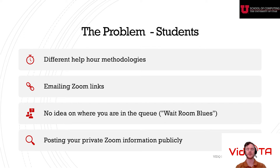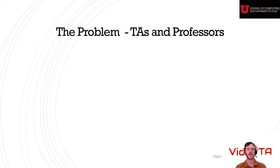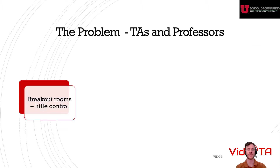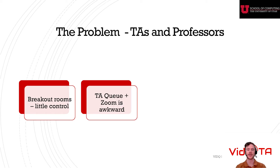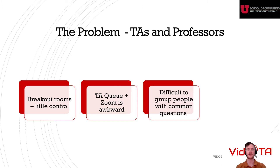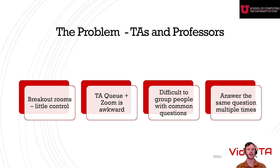It also means that sometimes you have to post your private information publicly that you would otherwise not want to expose. For TAs and professors, it can mean a lot of added overhead, as technology such as Zoom breakout rooms don't offer the control necessary to efficiently run help hours. In the case of the School of Computing at the University of Utah, it means managing multiple websites at once with the existing CSTA queue and whichever video conferencing option the course uses. It's also difficult to group students with similar questions, meaning TAs end up answering the same question multiple times.